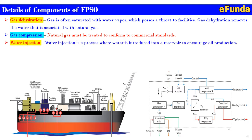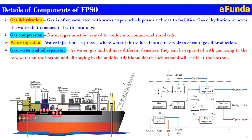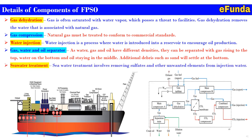Water injection: water injection is a process where water is introduced into a reservoir to encourage oil production. Gas, water and oil separator: as water, gas and oil have different densities, they can be separated — with gas rising to the top, water on the bottom and oil staying in the middle. The additional debris such as sand will settle at the bottom. Seawater treatment: seawater treatment involves removing sulphates and other unwanted elements from injection water.